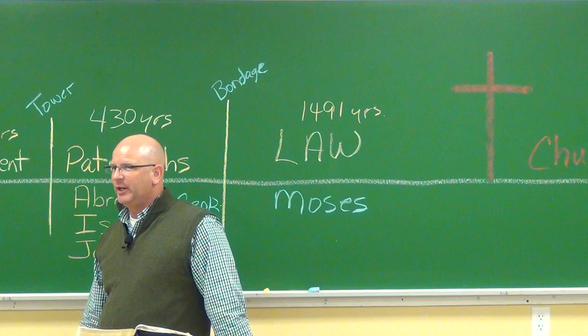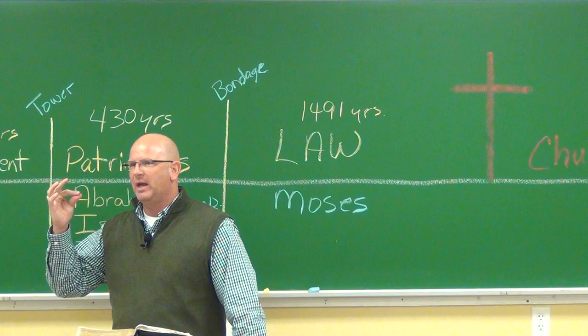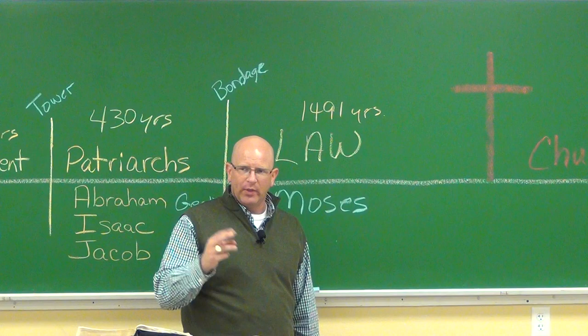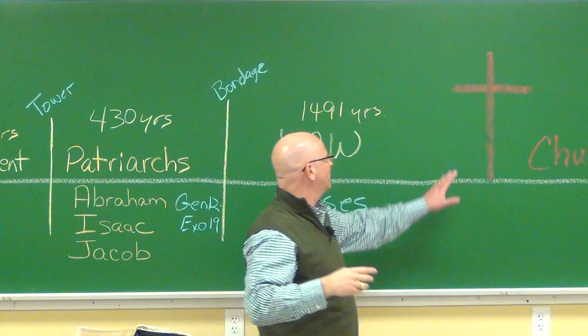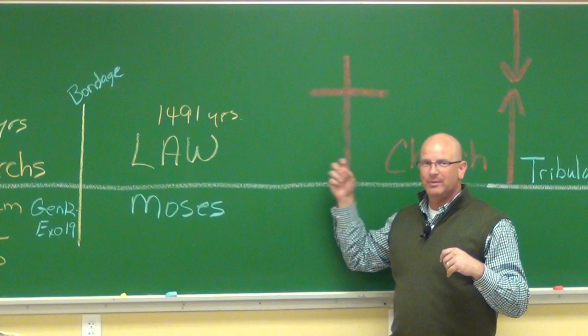He stayed there and met two fellows — the butler and the baker. He began to tell them their dreams. One of those two guys gets out of prison; the other one dies. Joseph then ascends out of the prison, and it's a picture of Jesus Christ. Jesus Christ dies with two thieves — one accepts him, one rejects him. That's a picture of the butler and baker in the prison.